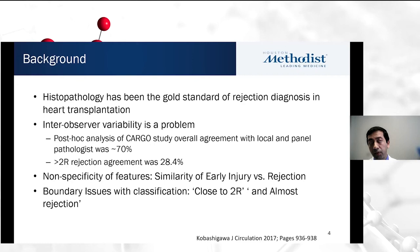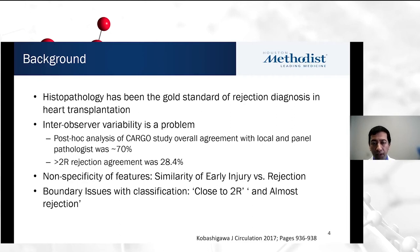When they looked at the degree of agreement between local and panel of pathologists for greater than 2R rejection, the agreement was only 28%. This is very poor agreement for making a diagnosis of rejection upon which we actually have to act and treat patients. The reasons include nonspecificity of features — similarity between early injury and rejection — and boundary issues with our binary classification, because we diagnose ABMR or ACR in grades, and biopsy specimens that don't fall into these binary boundaries are harder to label.